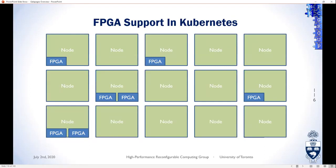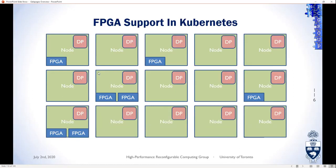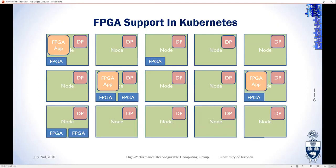In a data center with nodes — some having FPGAs, some multiple FPGAs, some none — Kubernetes doesn't know about those FPGAs. We create a Kubernetes device plugin that is deployed on all nodes. It detects whether an FPGA is connected to a node and if so becomes the controller and provider of those FPGAs, also allowing Kubernetes to know where to deploy FPGA applications. Our device plugins can supply an FPGA as a whole — so an application can occupy the entire FPGA — or use partitions, what we call FPGA tenants, with a hardware shell to manage them.